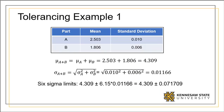Now we can find the six sigma tolerance limits to be 4.309 plus or minus 0.071709. Note that we used a factor of 6.15 as previously discussed.